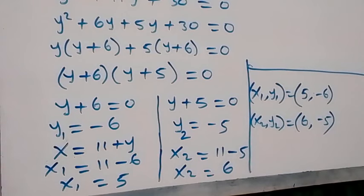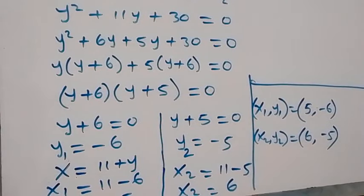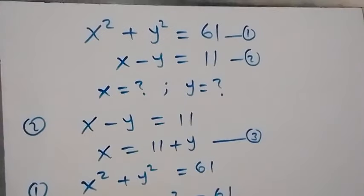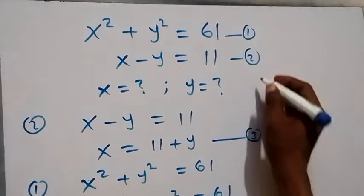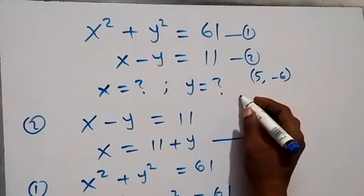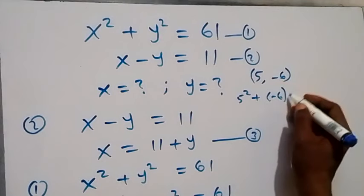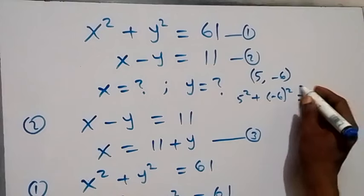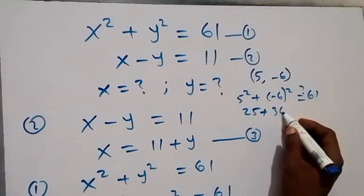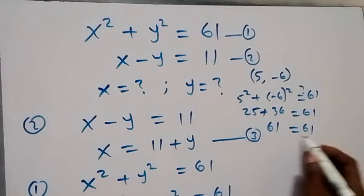We can quickly check that these solutions satisfy the given equations. For equation one, x squared plus y squared equals 61: using the first solution (5, minus 6), we get 5 squared plus (minus 6) squared, which is 25 plus 36, equals 61. Left hand side equals right hand side.